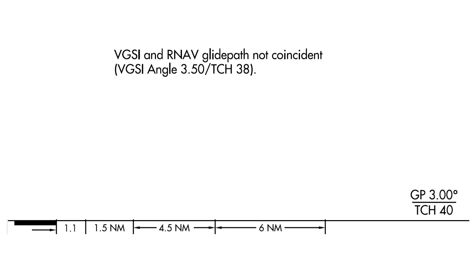First is this note saying the VGSI and RNAV glide path aren't coincident. VGSI, or visual glide slope indication, is the array of lights letting us know if we're high or low on the approach. In this case, it's the VASI lights. They're used by both VFR aircraft and IFR arrivals transitioning into the visual phase of the approach. The note is saying that the path the VASI lights make does not match up with the glide path from the RNAV. Then in parenthesis, it says what the angle is — three and a half degrees — and that it crosses the threshold at 38 feet.